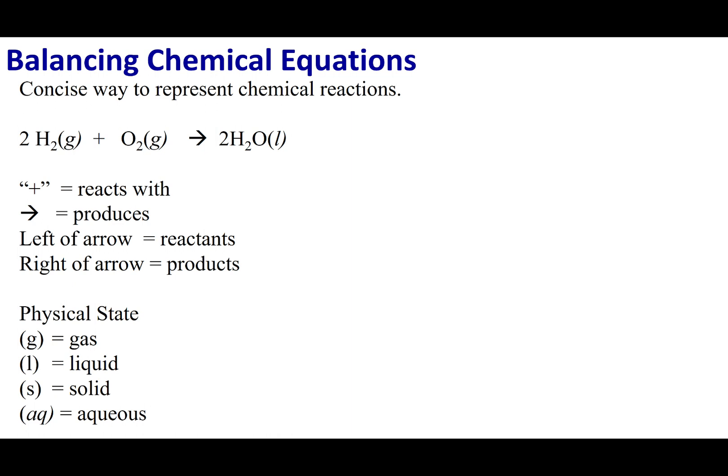Let's talk about the symbols we're going to use in a chemical equation. On the left-hand side of our chemical equation we have our reactants — the stuff we're starting out with. On the right-hand side of the arrow are going to be our products, which is what our reactants turn into after the reaction is done. The addition sign means 'reacts with' and the arrow means 'produces,' so the reactants produce the products.